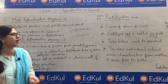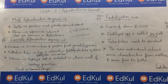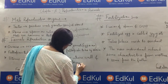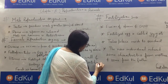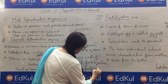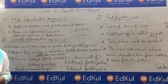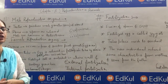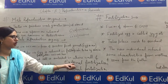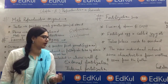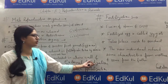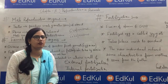One more topic is external and internal fertilization. External fertilization, as the name suggests, means the fusion of male and female gametes occurs outside the female body. This is known as external fertilization. It mostly happens in aquatic animals or amphibians — like frogs and fish — which exhibit external fertilization.